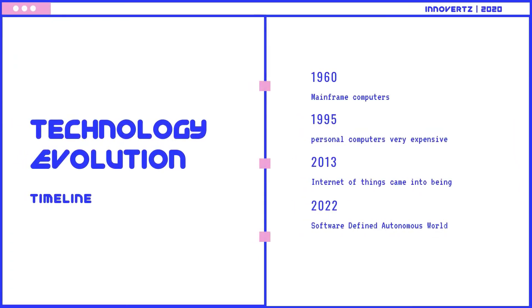Technology is evolving very rapidly day by day. You can see in the timeline how expensive and less efficient devices are replaced and improved by the latest and faster ones. In 2013 the Internet of Things was introduced, and by 2022 a software-defined autonomous world is predicted.